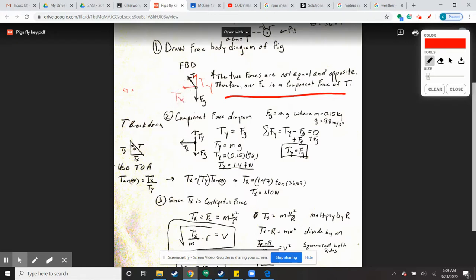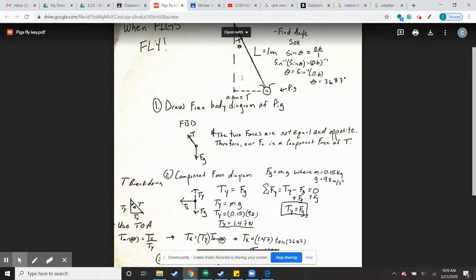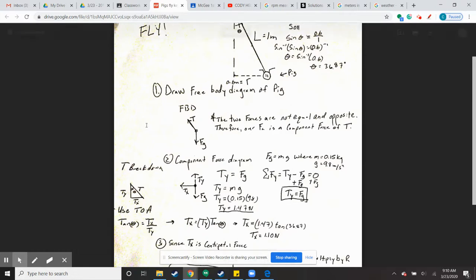The Tx force is going to be our centripetal force in this case because that force is pointed towards the center of our circle our pig is making flying around.